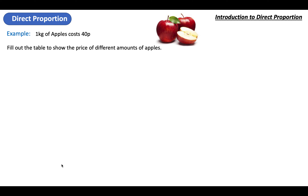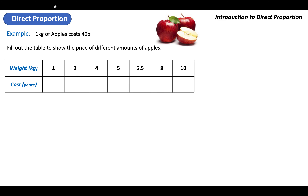Let's fill out a table to show what I mean, because this is more of what direct proportion often looks like. We've got a table with the weight of apples across the top, and underneath we're putting how much each of those weights would cost in pence. So one kilo of apples costs 40 pence.